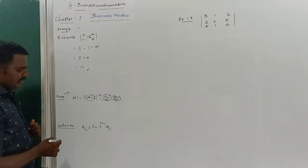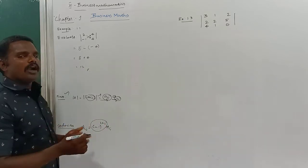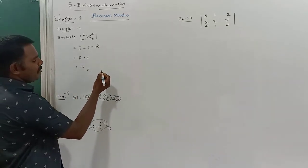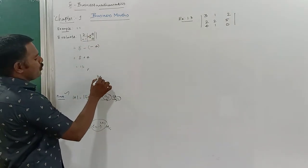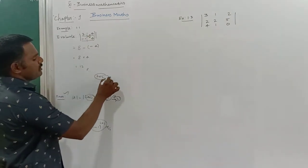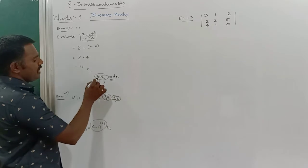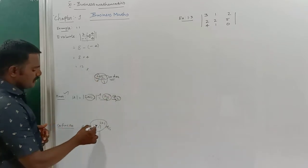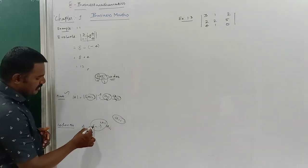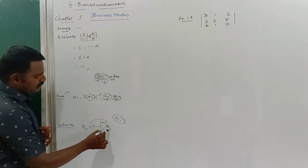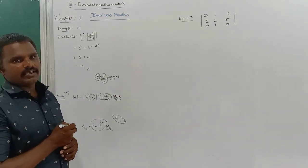So what is meant by the cofactor? You can find it out using minus 1 to the power i plus j, where ij is the order of the matrix. Order of matrix means the number of rows and number of columns. IJ means A11. To find the cofactor of A11: minus 1 to the power i plus j, into Mij. Mij means the minor of ij. It is called the cofactor.